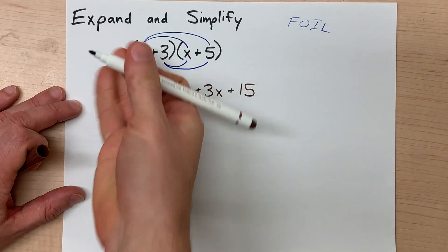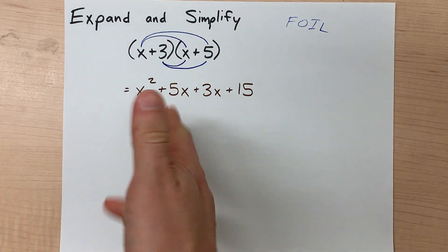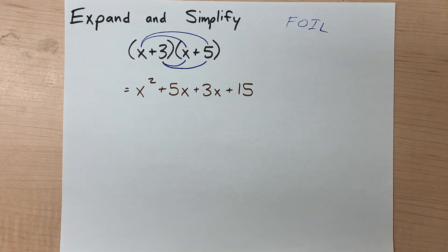Now that's the expansion because we've gotten rid of the brackets. The next step is to simplify, which other teachers call collect like terms.